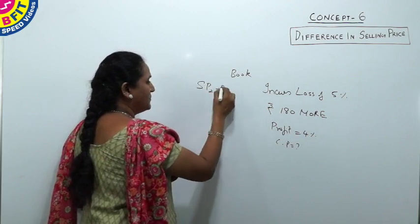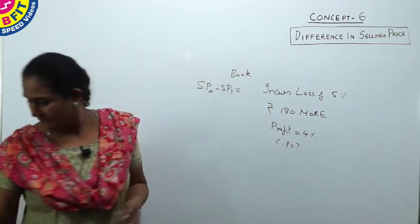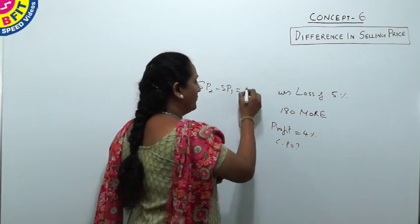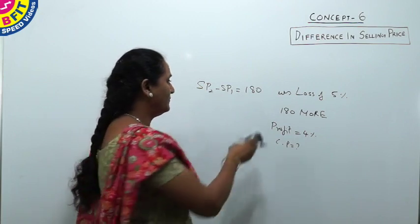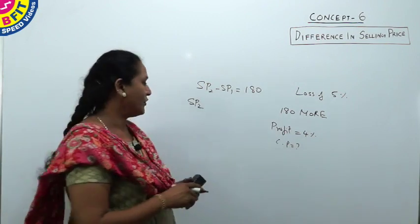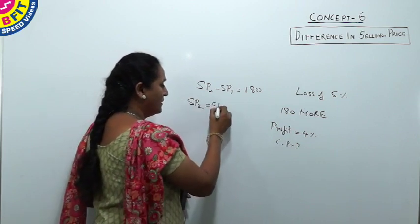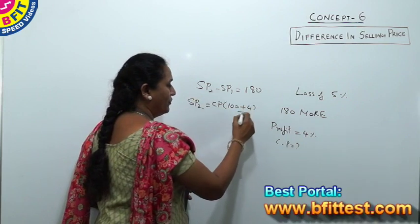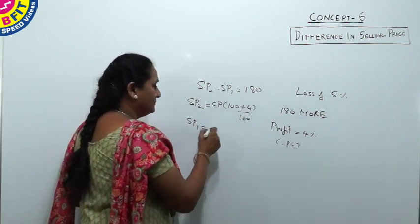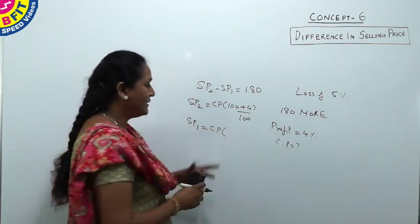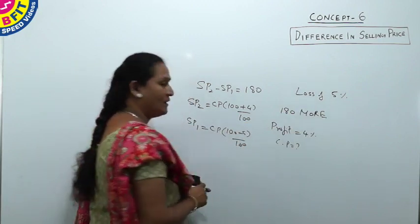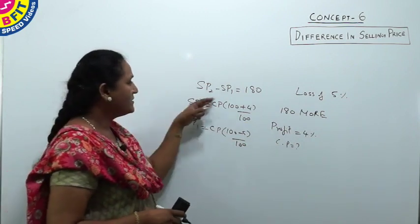So the key value is SP2 minus SP1. SP2 is the one which gives 4% profit, so it equals cost price × (100 + 4) / 100. SP1 is the one with 5% loss, so it equals cost price × (100 − 5) / 100. The only clue from the data is that the difference in selling price is 180.